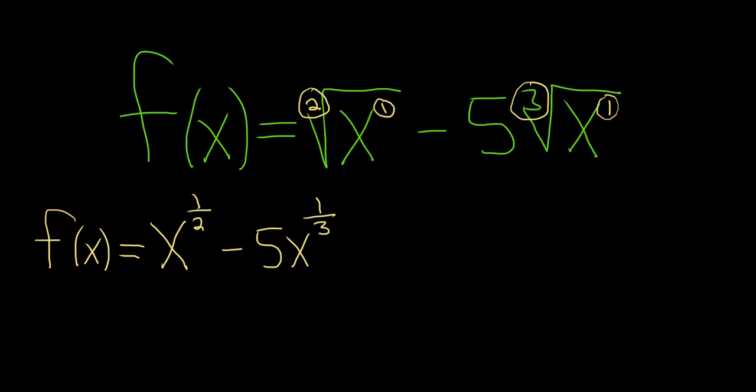Now we're in a good place. We can take the derivative. So f prime of x is equal to... Using the power rule, we'll bring down the 1 half. So we have 1 over 2, x to the, and then 1 half minus 1 is negative 1 half.